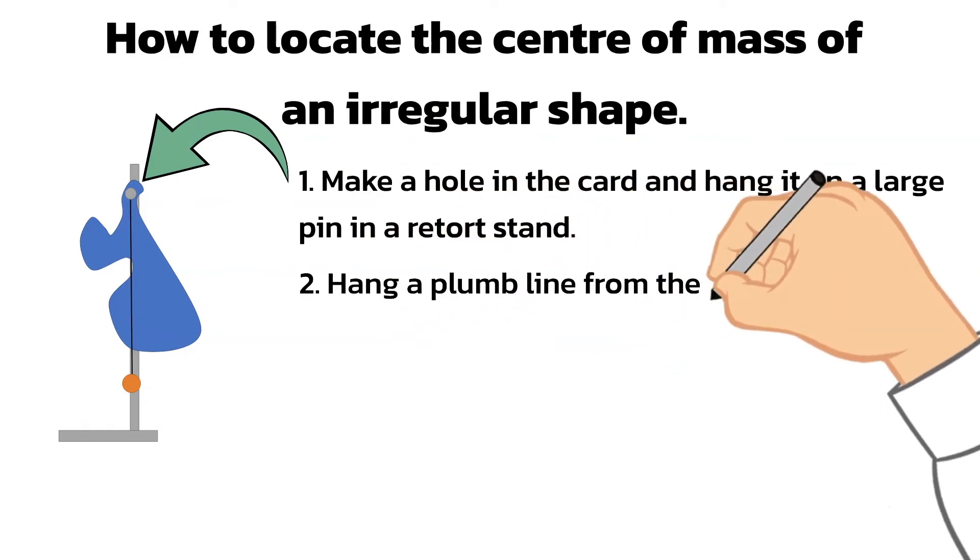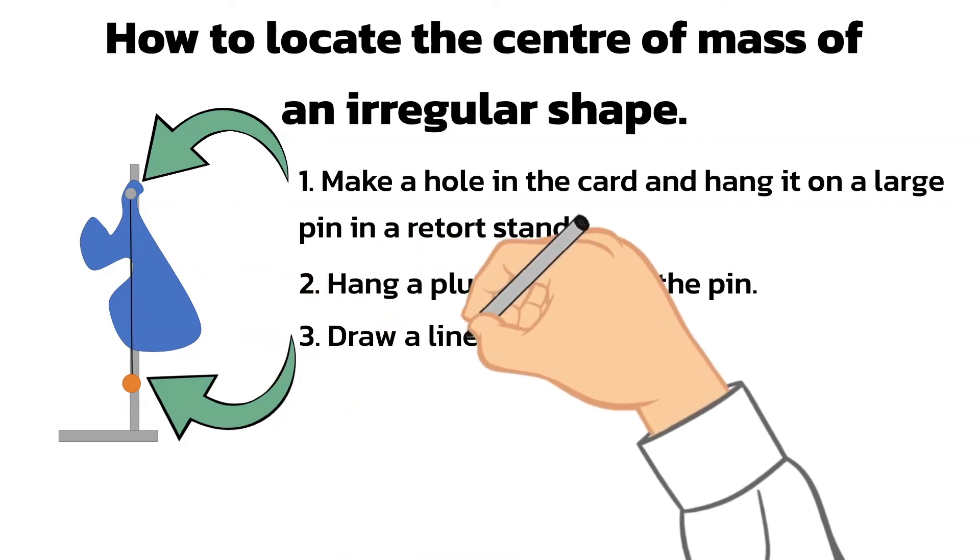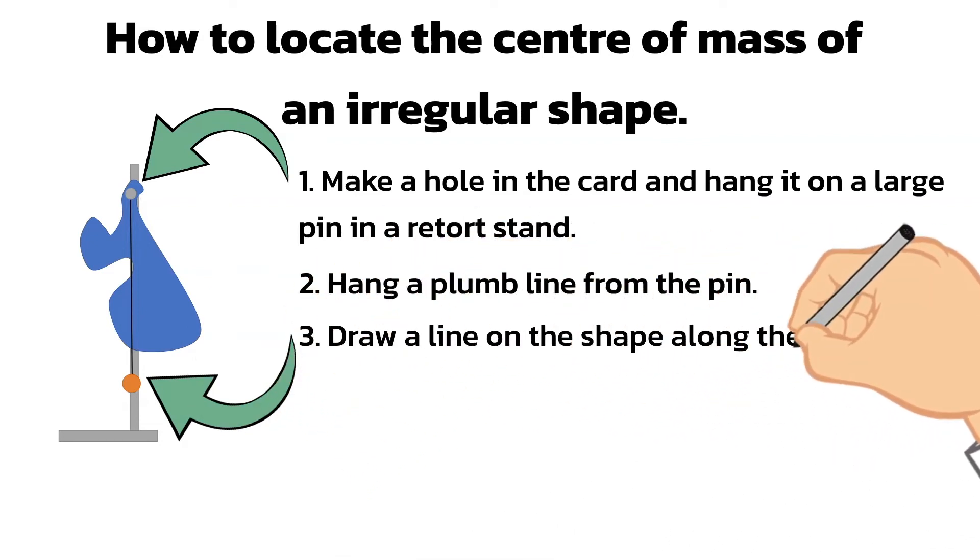Next hang a plumb line from the pin alongside the shape. A plumb line is just a weight on a string which hangs vertically from the pin. Being careful not to move anything, mark a line on the shape along the plumb line.